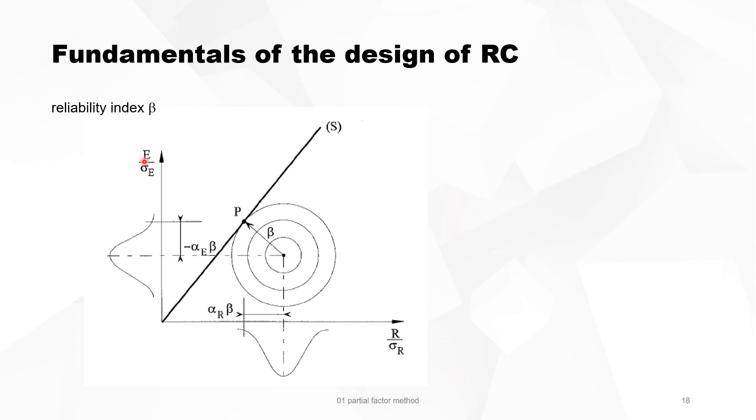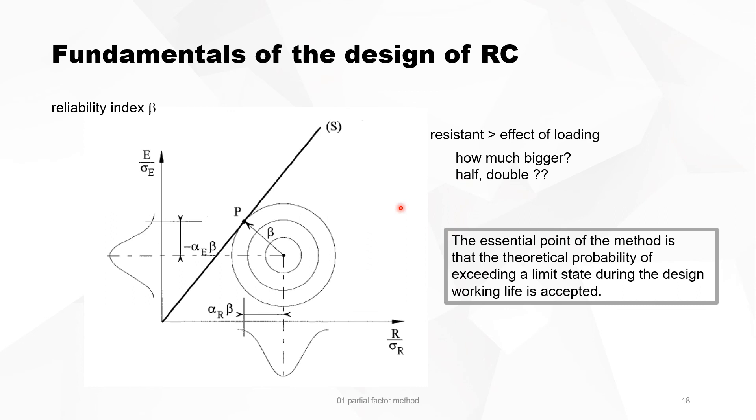In fact, we always want the resistance to be bigger than the effect of loading, which is evident. But how much bigger do we want it? Do we want half of it or double it? Normally we say the resistance must be bigger, so at least it should be the same. But must it be 10% more, 20% more, or even more than that? We don't know. So to help us, we use statistics, and this is the way we do it, by filling in those numbers.